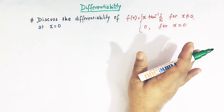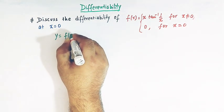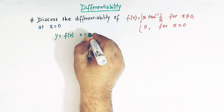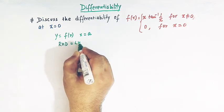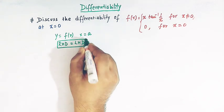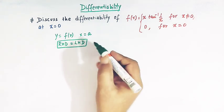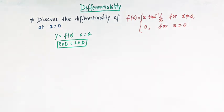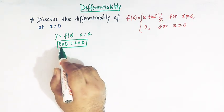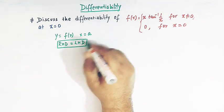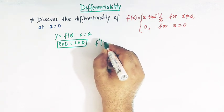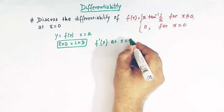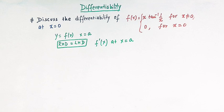We know that a function y = f(x) is differentiable at some point x equal to a if the right hand derivative and the left hand derivative are equal to each other. The right hand derivative must exist and be finite, similarly the left hand derivative must exist and be finite, and both derivatives must be equal at x equal to a. Then we can claim that f prime of x exists at x equal to a. So let us first find the right hand derivative and the left hand derivative.